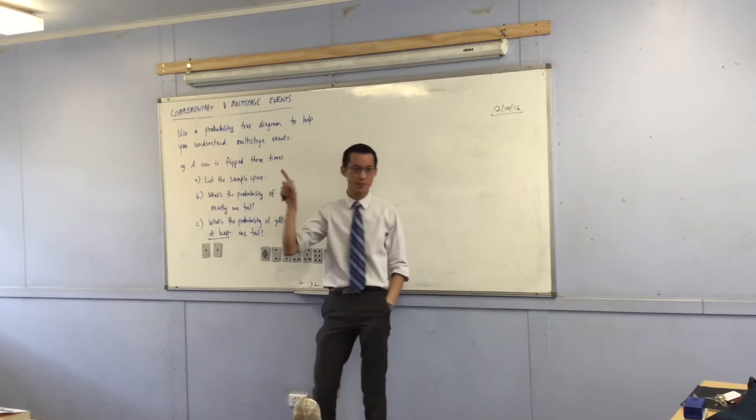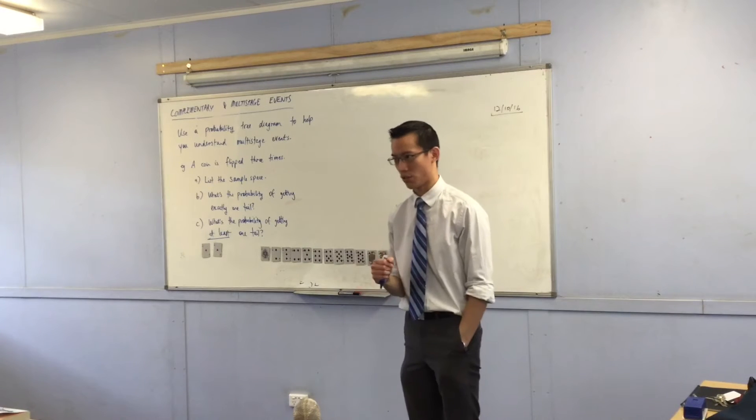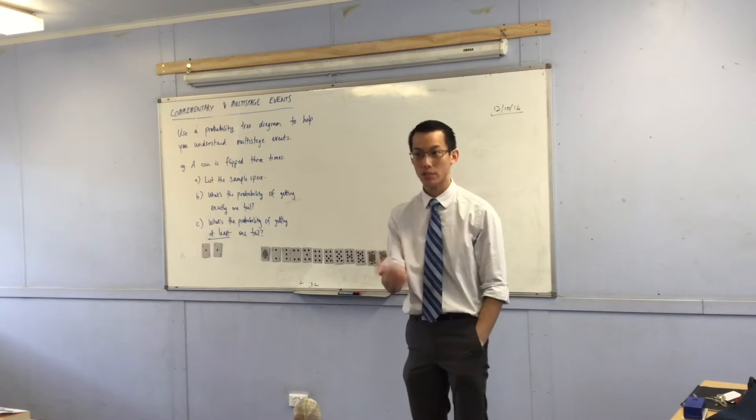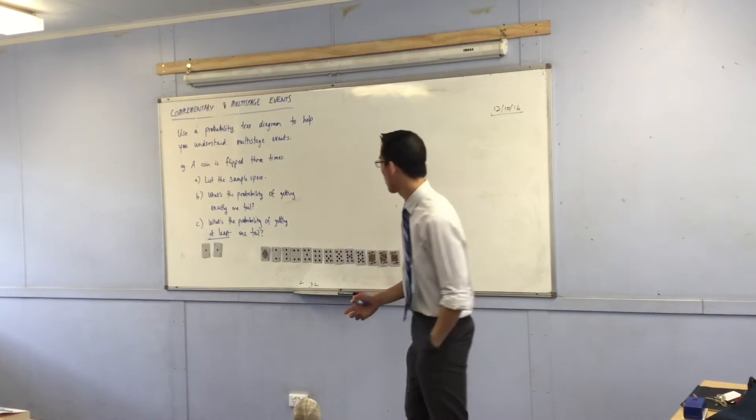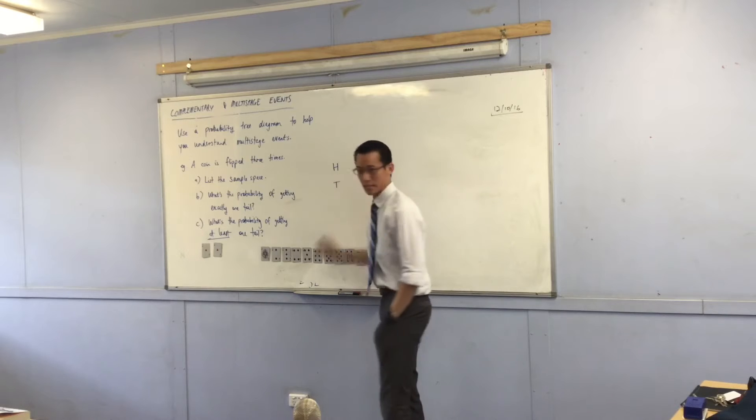A coin flipped three times. When you flip it the first time, what's the total sample space? Heads or tails. So the size is two. The way I'm going to represent that is to say heads or tails.